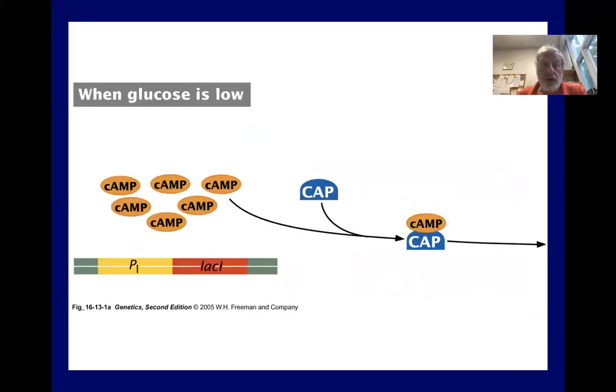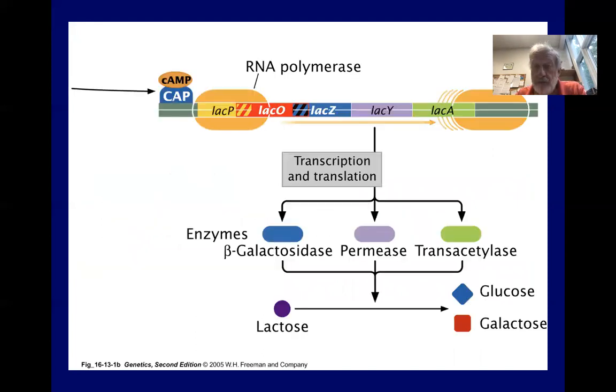So when glucose is low, there's plenty of cyclic AMP around and it combines with CAP to form the complex. And that increases the affinity of RNA polymerase for the operon and lots of transcription and translation occurs. And then we can break down the lactose.